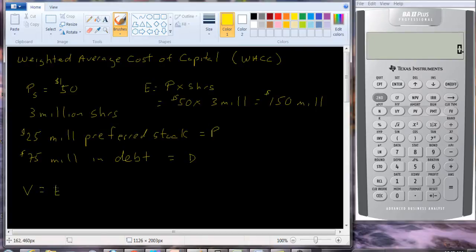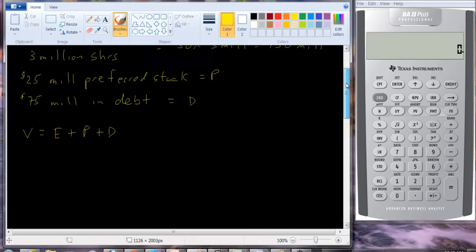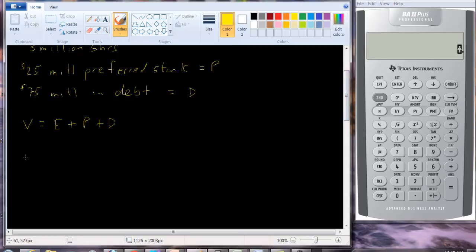The value of the firm is equity plus preferred stock plus debt. And what are the proportions? The proportions, the proportion of equity, it's just going to be the amount of equity we have divided by the total value of the firm. So, what's the total value of the firm here? Equity is $150.